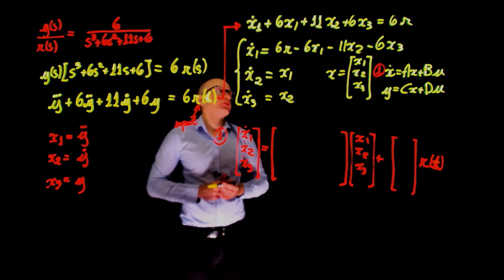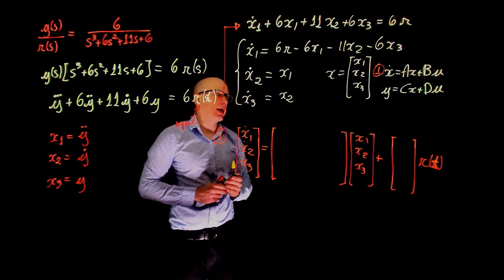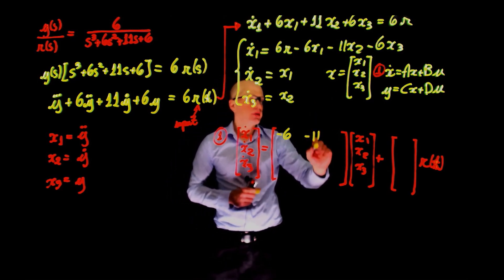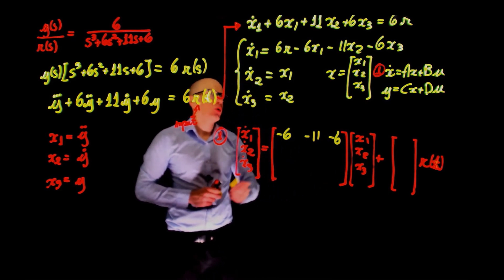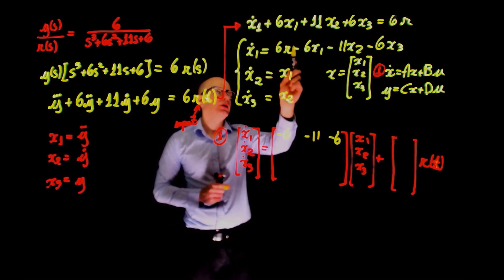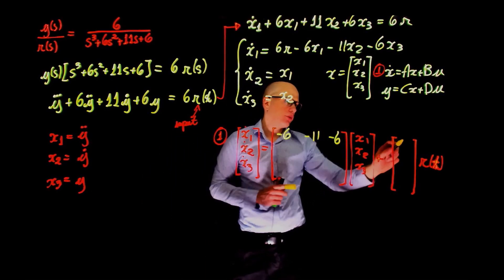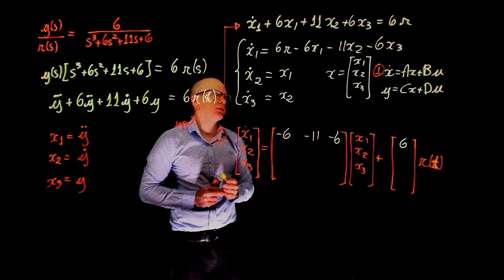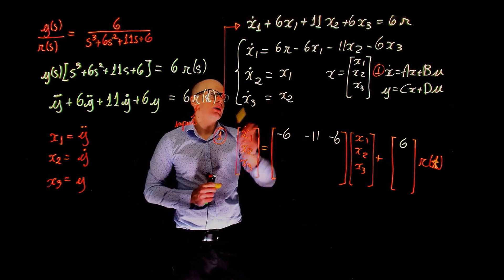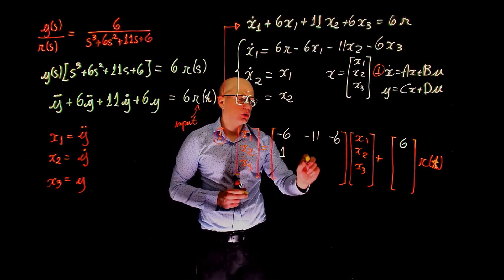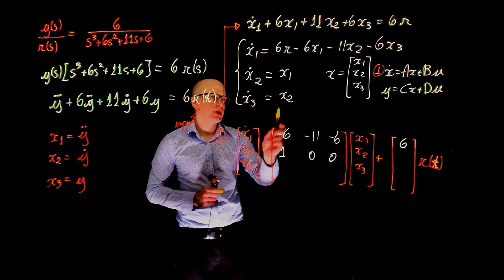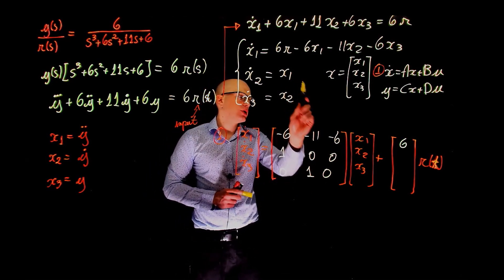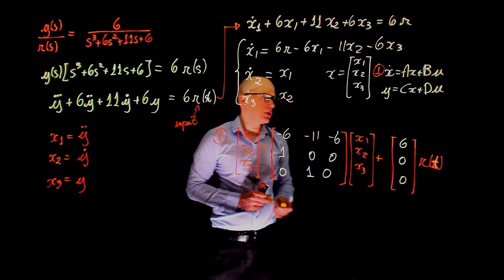Looking at ẋ1: the first cell multiplying x1 is −6, the second cell multiplying x2 is −11, and the third cell multiplying x3 is −6. The input r appears in ẋ1, so the first cell of b is 6. For ẋ2, it is only a function of x1, so the first cell is 1 and the other two are 0. For ẋ3, it is only a function of x2, so we have [0, 1, 0]. For ẋ2 and ẋ3 there is no r term, so those b cells are 0.